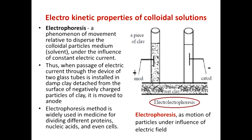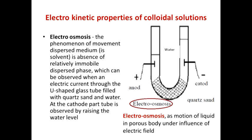Electrokinetic properties include electrophoresis — the movement of particles in an electric field toward the oppositely charged electrode. For example, negatively charged clay particles move to the positive electrode (anode). Electroosmosis is the movement of the dispersion medium liquid through a porous body in an electric field.